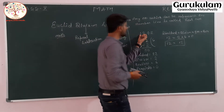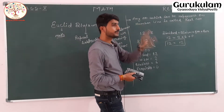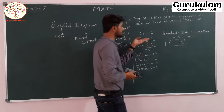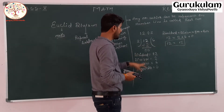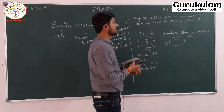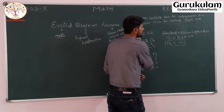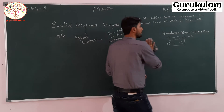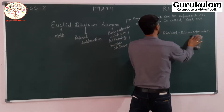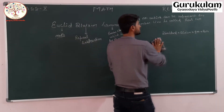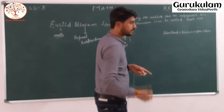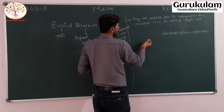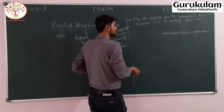Which number is being divided is called the dividend. Which number is dividing the dividend is called the divisor. The number of subtractions we can have is called the quotient, and the number left after division is called the remainder. Please pay close attention to this formula — it will help us solve many questions.